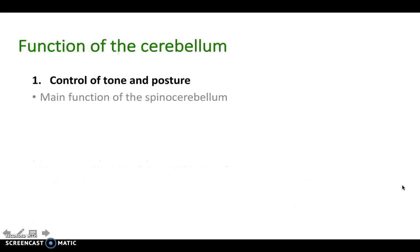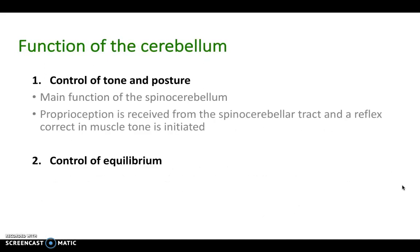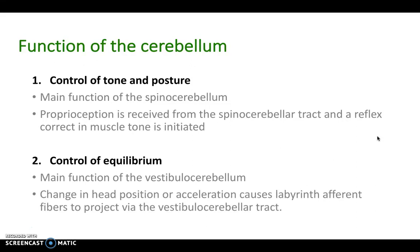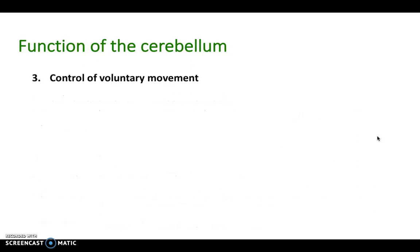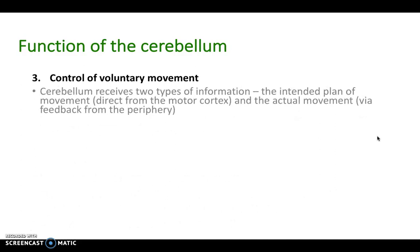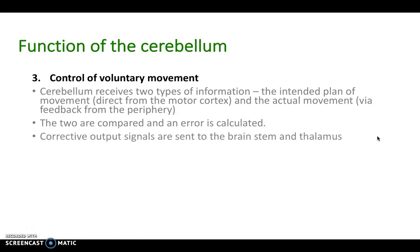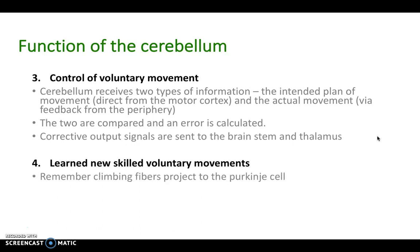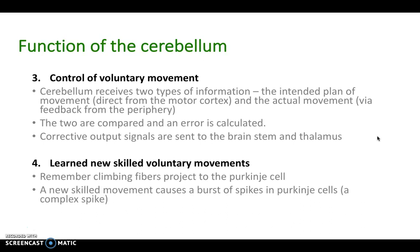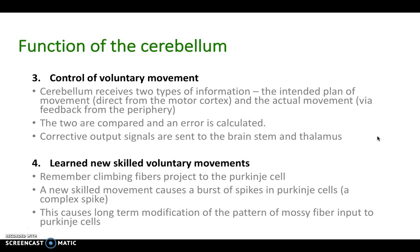The overall functions of the cerebellum: the spinal cerebellum is mainly responsible for control of tone and posture. Equilibrium is mainly under the control of the vestibular cerebellum. For control of voluntary movement, the cerebellum receives information from the motor cortex and from the actual movement feeding back, the difference between the two calculates an error, and corrective output signals are sent via the brainstem and thalamus. For learned new skilled voluntary movements, climbing fibers project to the Purkinje cells, and new skilled movement causes a burst — called a complex spike — which is modified to be remembered next time so that you can learn that skilled movement.